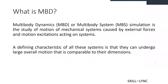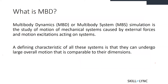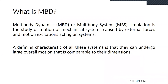The most important characteristic of all these systems is that they undergo large overall motion that is comparable to their dimensions. MBD systems consist of bodies or links that are connected to each other by constraints — which can be either joints or motions — and these constraints restrict the relative motion between the two entities. The analysis of the working of these systems is the study of multibody dynamics.